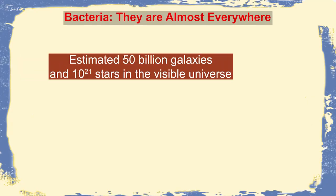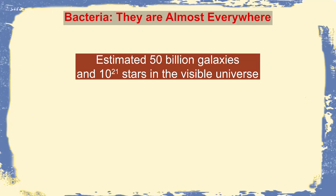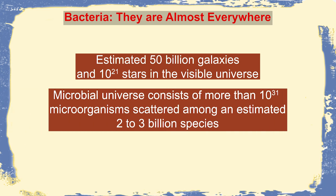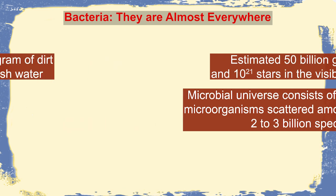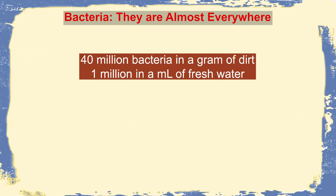Bacteria are present almost everywhere. It is estimated that out of 50 billion galaxies, we have 10 to the power of 21 stars in the visible universe. But if we look into the microbial universe, we realize there are 10 to the power of 31 microorganisms, scattered across an estimated 2 to 3 billion species. Out of them, 40 billion bacteria can be found in just 1 gram of dirt, and 1 million of them are present in just 1 ml of water.